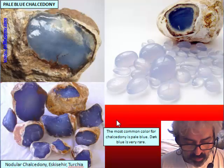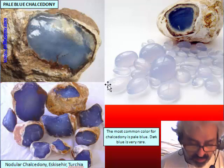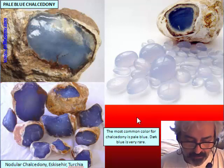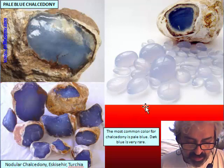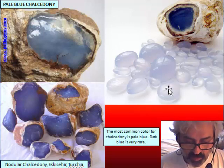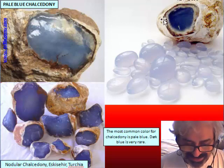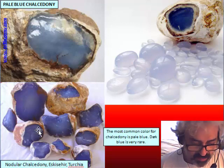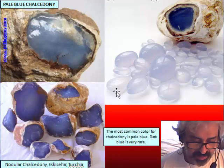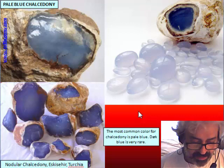The most common color for chalcedony is pale blue, which is probably its natural color due to ferrous iron. In jewelry, the most intense colors are very rare, so pale blue is the more common color. Even if the rough looks darker, that color is due to the skin — if you cut it, the inside is more likely this pale color. The darker color is quite rare. The most important deposit of this kind of unbanded blue chalcedony is from Turkey.